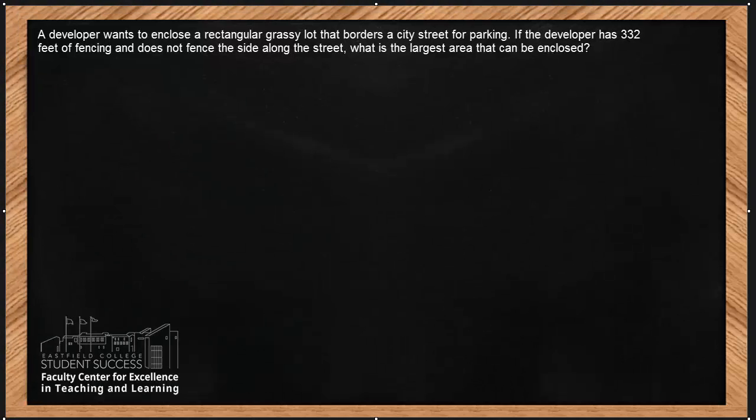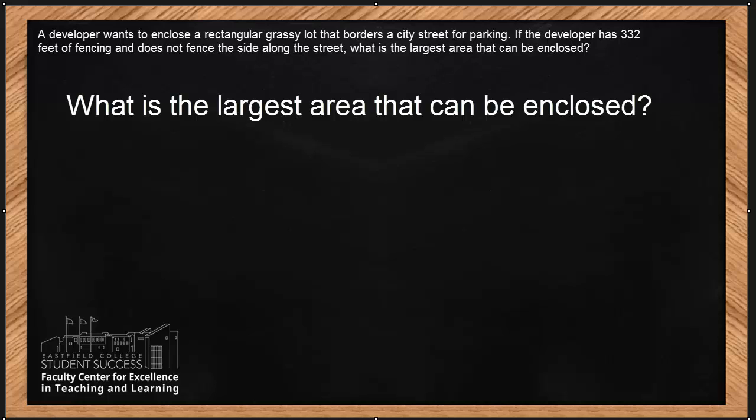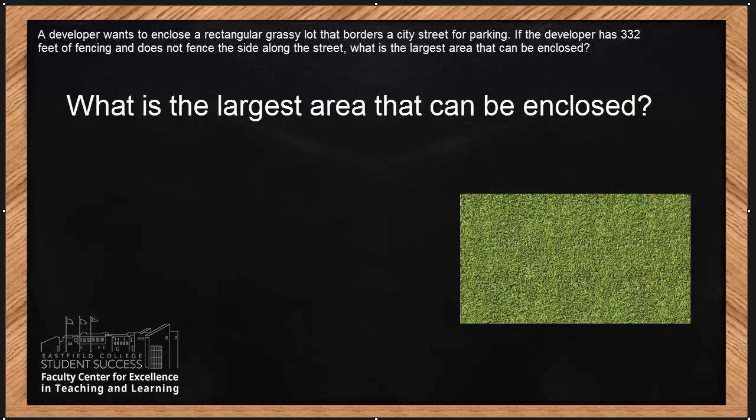Notice that we're going to start this problem with the question itself. The question is what is the largest area that can be enclosed? Because we're trying to find the largest area and we know that the area here is dealing with a rectangular grassy lot, that means we're looking for something that's going to be rectangular. If we do have a rectangle, then the rectangle has two opposite sides that are the same. So these two sides will be the same and so are these two sides.